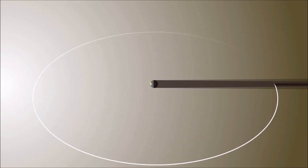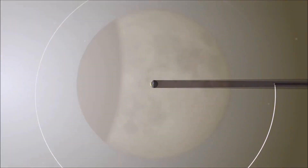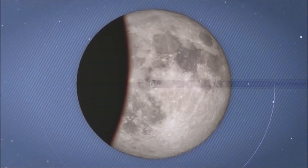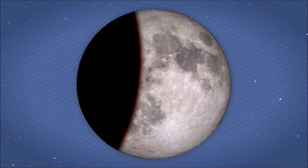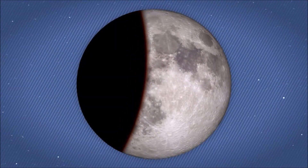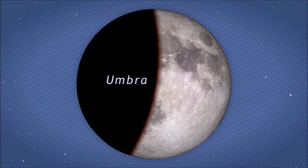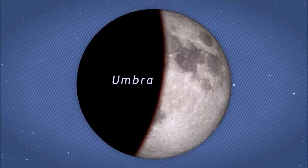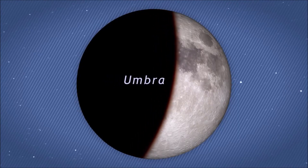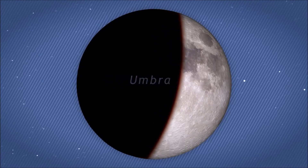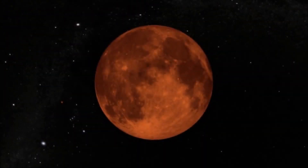During a total lunar eclipse, the shadow of the Earth will cross gradually over the surface of the moon, but once the moon has entered the umbra, completely blocking the sun's light, the moon will often look reddish.